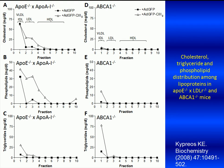To determine the distribution of phospholipids, triglycerides, and total free and esterified cholesterol among lipoproteins in ApoE1 double-deficient mice and ABCA1 single-deficient mice, animals were infected with 8×10⁸ PFU of the ApoC3-expression adenovirus. Plasma samples were isolated 5 days post-infection and fractionated by density-gradient ultracentrifugation. Different density fractions were then analyzed for total free and esterified cholesterol, triglyceride, and phospholipid levels. This analysis showed that expression of ApoC3 in ApoE1 double-deficient mice resulted in an increase in plasma cholesterol levels of the LDL and HDL fractions, while VLDL cholesterol levels remained unchanged compared to mice infected with the control ADGFP adenovirus.